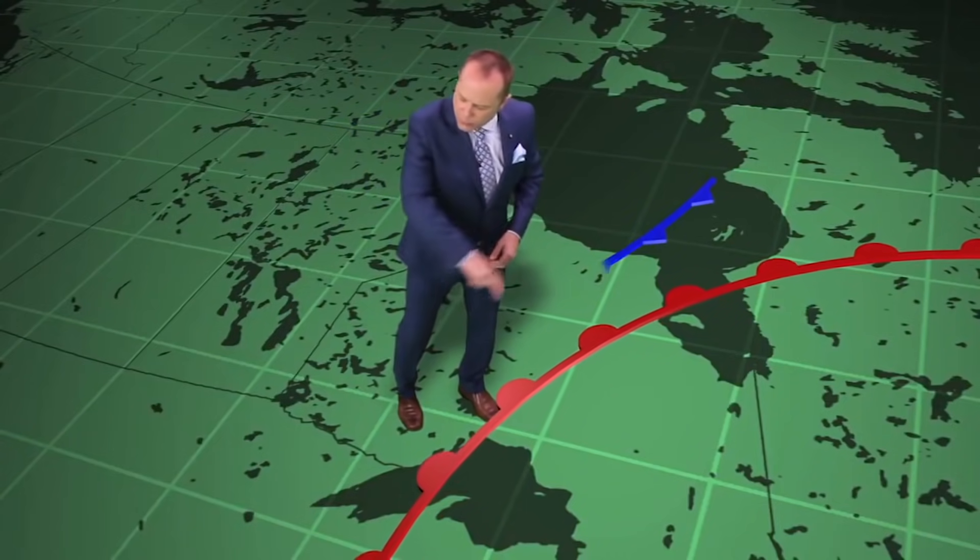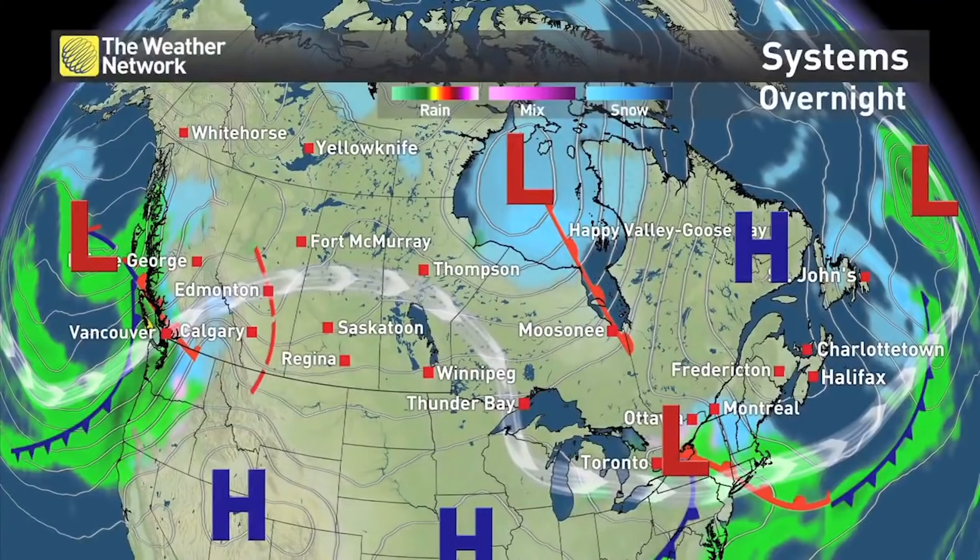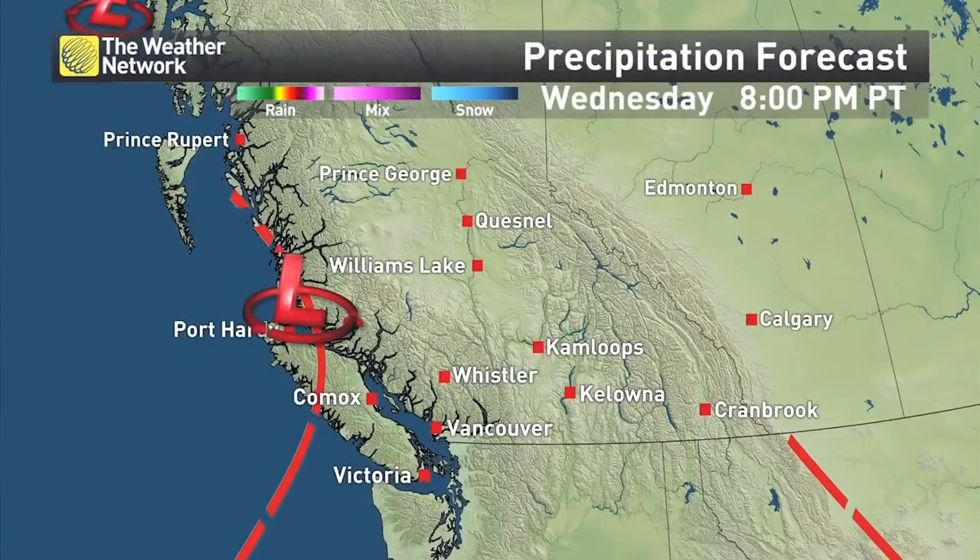Blue spiky lines, red bumpy lines, we see these on our weather maps all the time. But what are these fronts, and what do they mean for our weather?